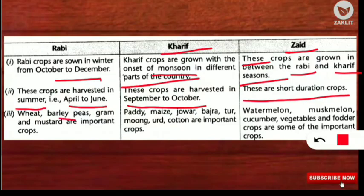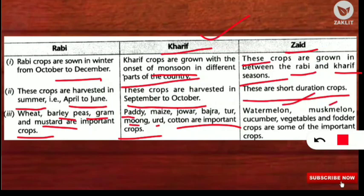Examples of Rabi crops: wheat, barley, peas, gram, and mustard. Examples of Kharif crops: paddy, maize, jawar, bajra, toor, moong, urad, and cotton. Examples of Zaid crops: watermelon, muskmelon, cucumber, vegetables, and fodder crops.